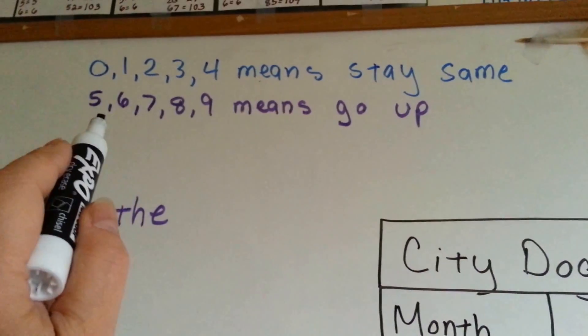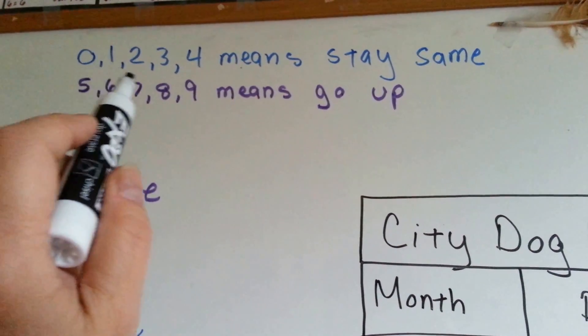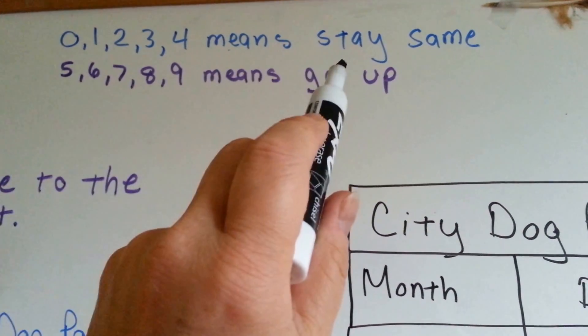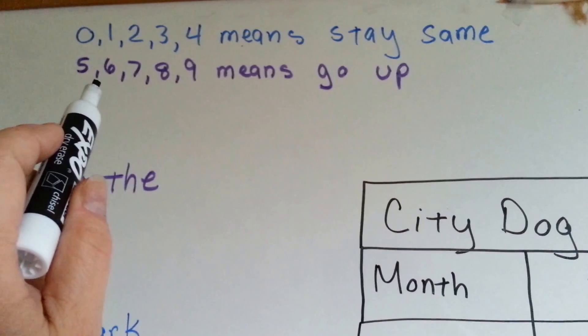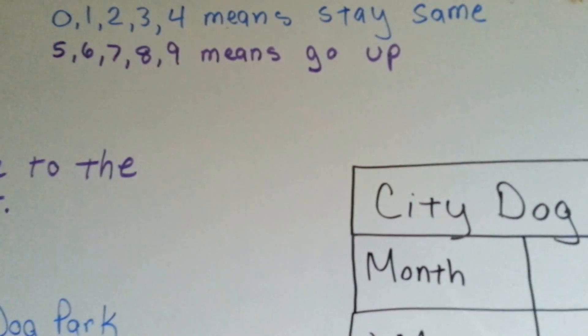Now, if you remember from our previous video, if the number to the right of it is a 0, 1, 2, 3, or 4, that means the number's going to stay the same. If the number to the right of it is a 5, 6, 7, 8, or 9, it's going to go up to the next biggest number.